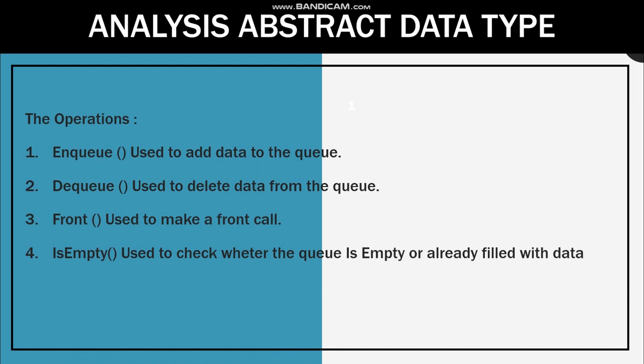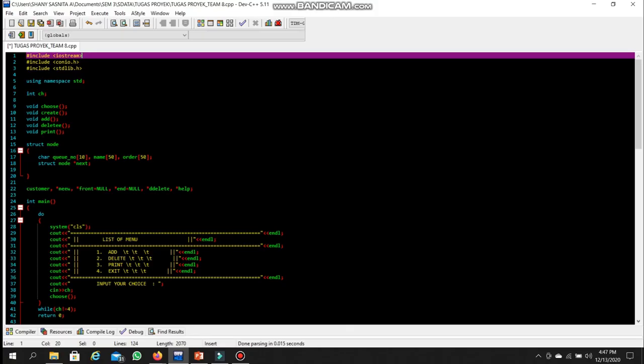The operations of the abstract data type used in our program are: first, enqueue — used to add data to the queue; second, dequeue — used to delete data from the queue; third, front — used to make a front call; and fourth, empty — used to check whether the queue is empty or already filled with data.